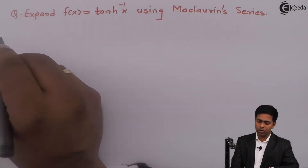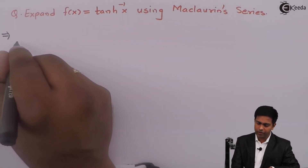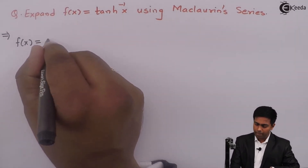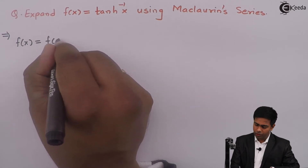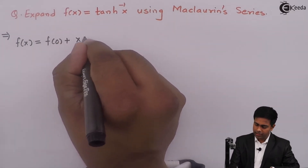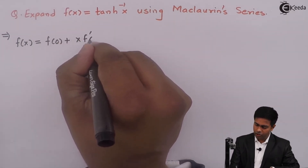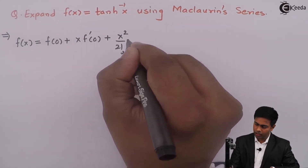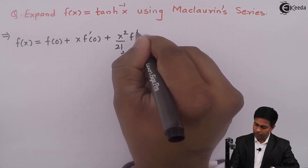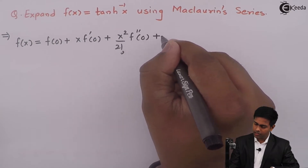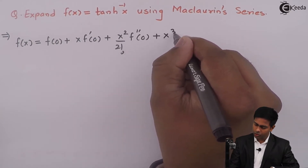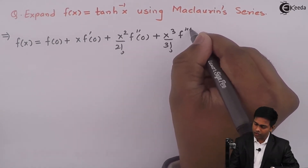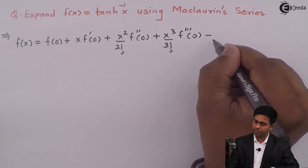The Maclaurin series is given by the formula: f(x) = f(0) + x·f'(0) + (x²/2!)·f''(0) + (x³/3!)·f'''(0) and so on.